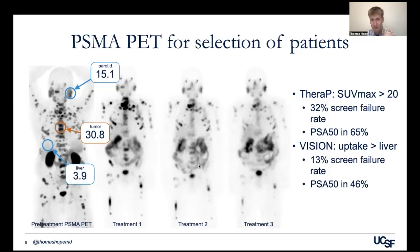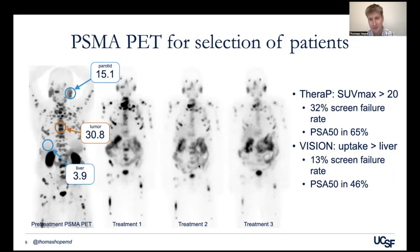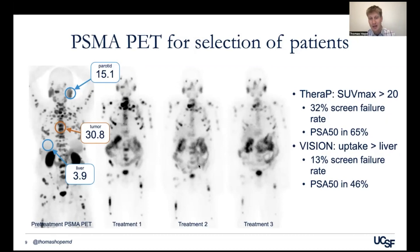That's shown by a couple of things. The VISION trial had a much lower screen fail rate because they allowed patients in with lower uptake — only a 13% rate of screen failure — whereas the TheraP trial had over 30% of patients who didn't qualify for the study. That also resulted in a higher PSA-50 rate: PSA fell by 50% in only about 45% of patients in the VISION trial, but 65% of patients in the TheraP trial. By removing patients who aren't good responders, they had higher response rates. Higher uptake means more likely to have a response.